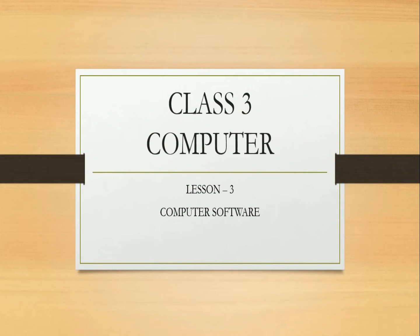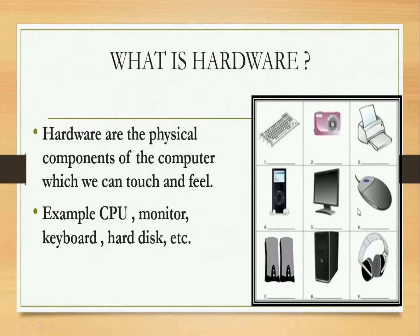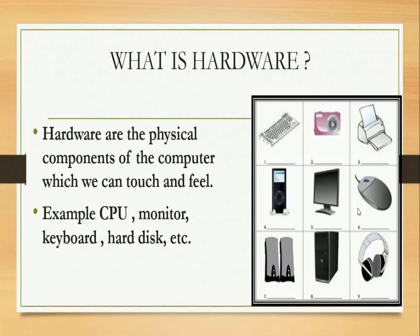This is your computer period and we are going to start with lesson number 3, that is Computer Software. Before explaining this chapter, I would like to explain the previous chapter again — that is hardware. Hardware are the physical components of the computer which we can touch and feel. For example, CPU, monitor, keyboard, hard disk, etc. In this picture you can see there are many parts of a computer which are hardware, which we can touch and feel.